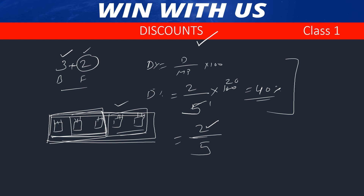2 by 5 is 40%. The percentage is 40%. So this is the discount percentage for a buy 3 get 2 free offer.